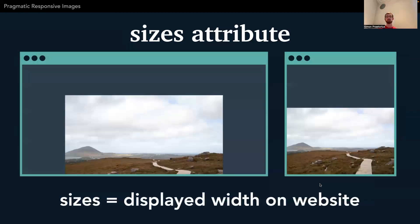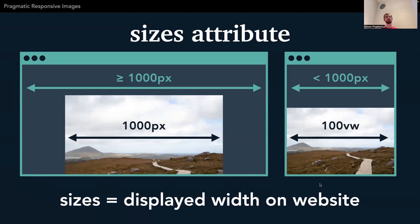The other attribute is sizes. Sizes describes how big the image actually is on the page. This is needed because at the moment the browser loads the image file, the CSS might not be loaded yet, so the browser needs to know in advance which image should be loaded. In this example, the image uses the whole viewport if the browser is smaller than 1000 pixels, but if it's bigger than 1000 pixels the image only uses 1000 pixels.